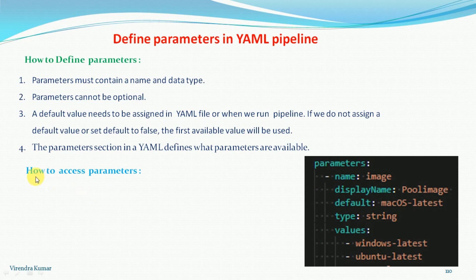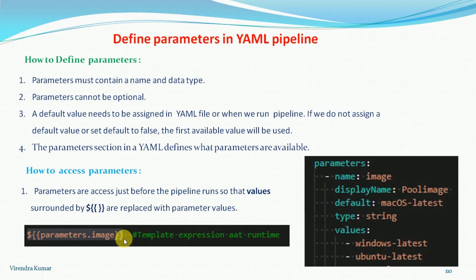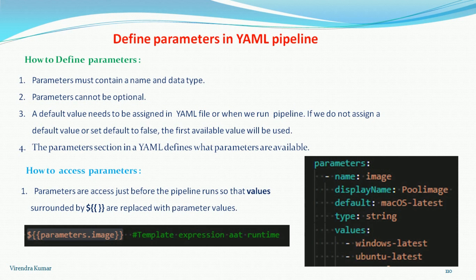Now let's look at how to access the parameters in the YAML file. Parameters are accessed just before the pipeline run. The values surrounded by the dollar sign and curly braces are replaced with the parameter values. The syntax is: ${{ parameters.image }} — where 'parameters' is the keyword and 'image' is the parameter name. We can select these values at runtime.